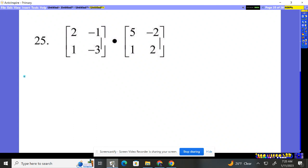Number 25 wants us to multiply these two matrices here. So, to multiply matrices, it's always going to be first row times first column, first row times the next column, first row times the next column.